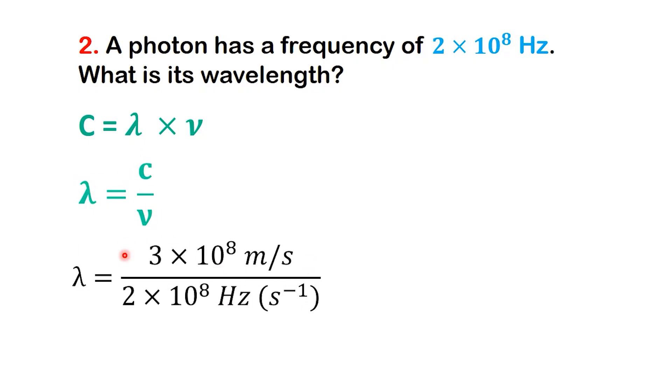Substituting the numbers. We take 3 times 10 to the power of 8 meters per second and divide it by 2 times 10 to the power of 8 per second. The per second units cancel, leaving us with lambda equals 1.5 meters. So, a photon with that frequency has a wavelength of 1.5 meters.